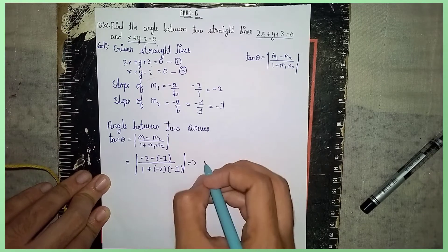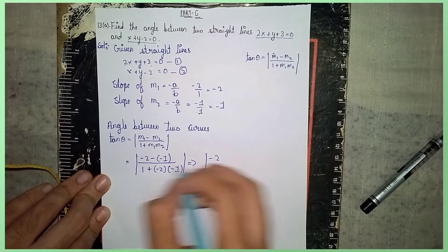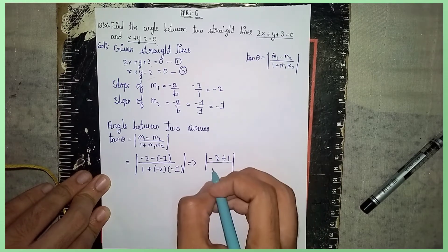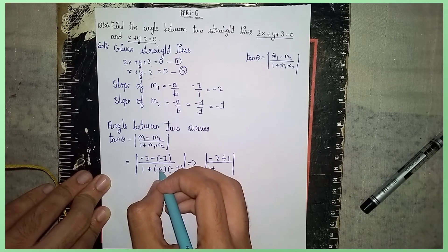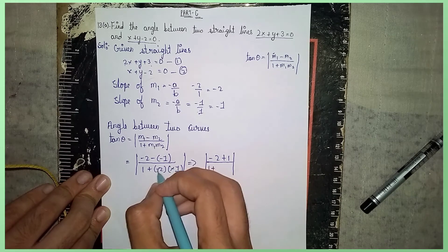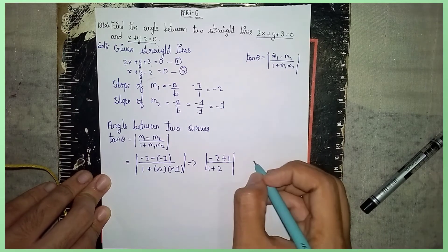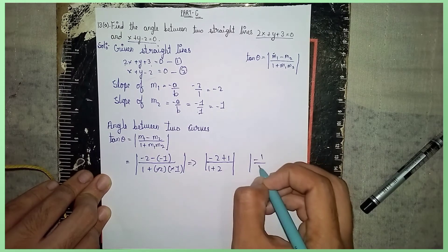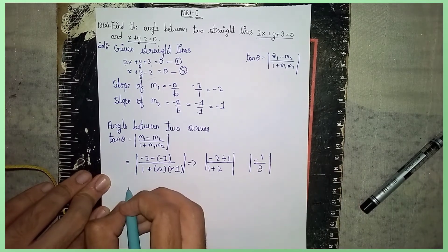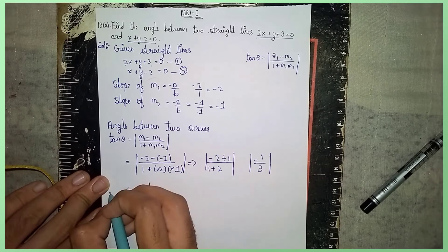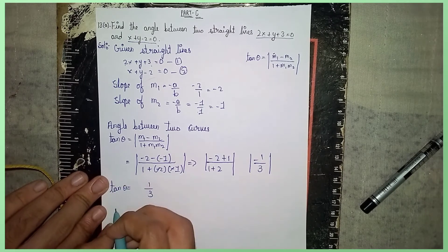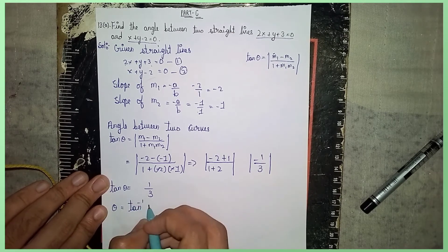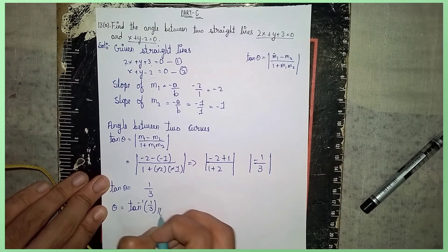Simplifying: numerator is minus 2 plus 1 equals minus 1. Denominator: one plus minus 2 into minus 1 — minus into minus gives plus, so one plus 2 equals 3. Therefore tan theta equals mod minus 1 by 3 equals 1 by 3. So theta equals tan inverse of 1 by 3. Thanks for watching.